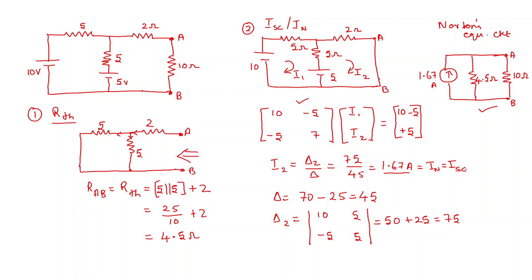This Norton's equivalent circuit can also be converted into a single voltage source in series with 4.5 ohms. Using source transformation, replace the 1.67 amps current source in parallel with 4.5 ohms with a voltage source in series with 4.5 ohms. The voltage will be 1.67 × 4.5 ≈ 7.52 volts, in series with 4.5 ohms and the 10 ohms load. This gives the Thevenin's equivalent circuit.